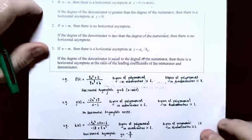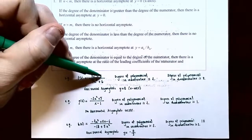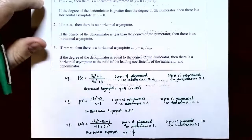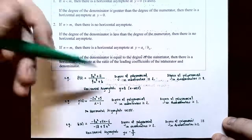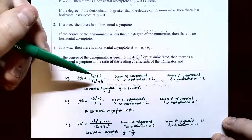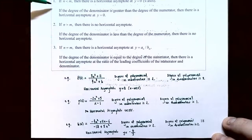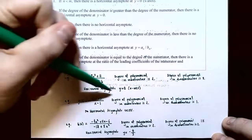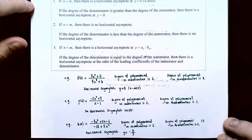Here are three examples illustrating these cases. First, f(x) equals (3x² + 11) / (4x³ + 6). The degree of the numerator is two and the degree of the denominator is three. Since the numerator's degree is smaller — case one — the horizontal asymptote is y equals zero, or the x-axis. The graph levels out towards the x-axis on both far ends.